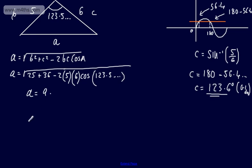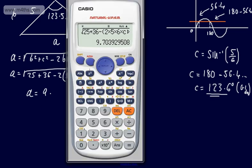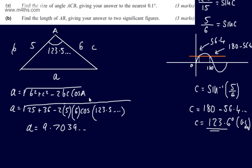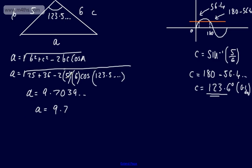Let's write this down. A equals 9.7039 dot dot dot. We need to give this to two significant figures, so we're going to have A equals 9.7, and we're working in centimeters, so we need to add the units. I've used the stored value in the calculator. You can, of course, use your answer from the last part that was rounded to 0.1.